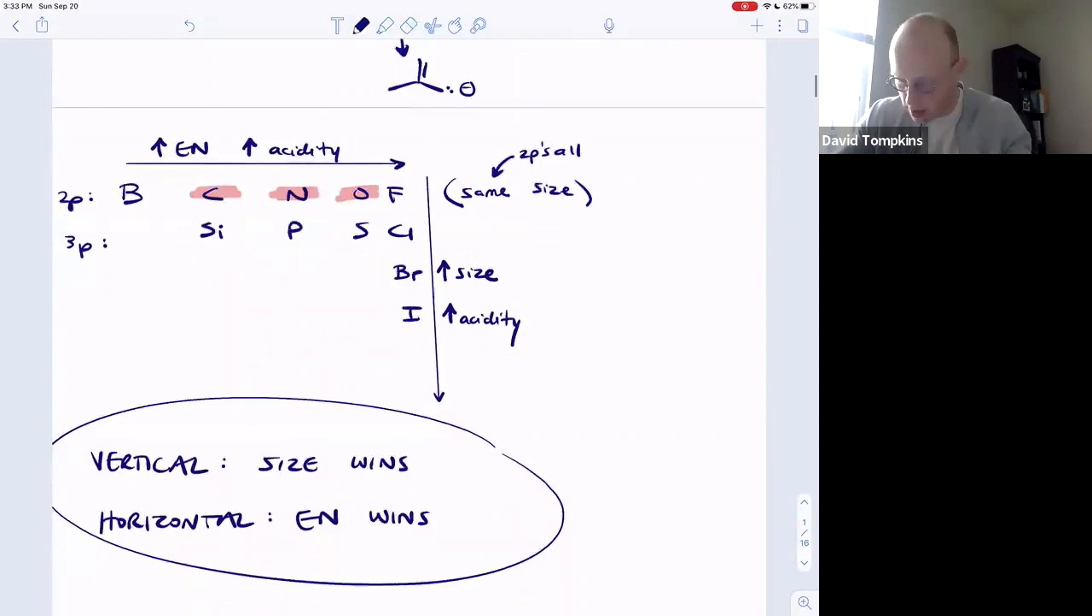So electronegativity is only a fair periodic trend. You can only read this trend here from carbon increasing to nitrogen. Electronegativity is only a fair comparison if they're all the same hybridization. Because if you change the hybridization and the s character, then things get screwed up. So I'm going to give you a list or a trend here to memorize so that you don't have to worry about any of those hybridization issues from now on.